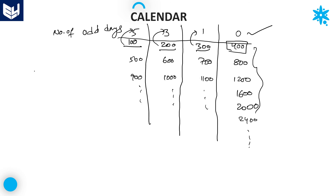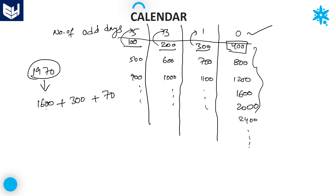For example, if you have 1970 years, split it as: the maximum 400 multiple is 1600 (odd days = 0), then add 300 years (odd days = 1), then handle the remaining 70 years separately. In this way, you can easily find the number of odd days whenever you are solving problems.